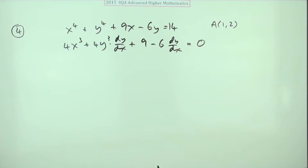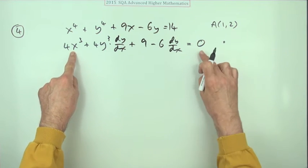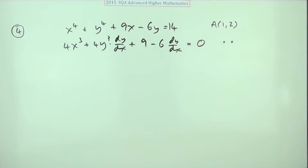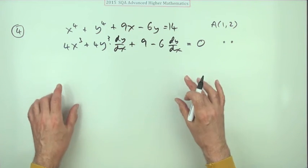And of course a constant disappears. Now there's actually two marks for this line: one for dealing with the x terms and the constant, and one for dealing with the y terms. There's two marks straight away. Now one thing in this question, it didn't ask you